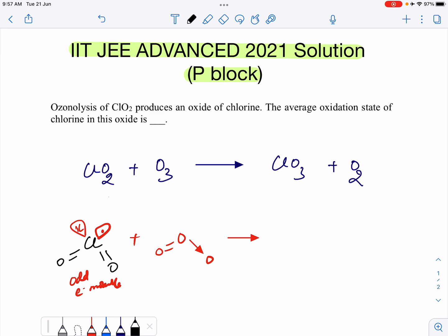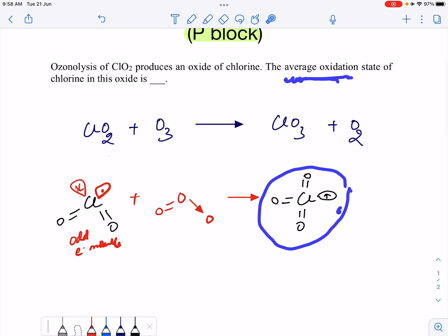The structure for ClO3 will be ClO3 and there will be one odd electron right here. Now check the question. The question says average oxidation state. Whenever there is average oxidation number, it certainly means the compound has more than one chlorine and we have here only one chlorine. So we already know odd electron molecules have a tendency to undergo dimerization to form more stable compounds.